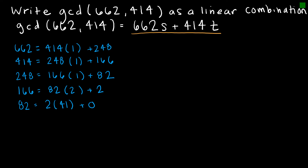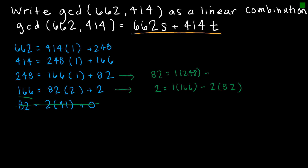Essentially what I'm going to do is ignore the last one. Starting here, I'm going to write it with respect to 2. So 2 is the same as 1 times 166 minus 2 times 82. Then 82 is equal to 1 times 248 minus 1 times 166. And 166 is equal to 1 times 414 minus 1 times 248.